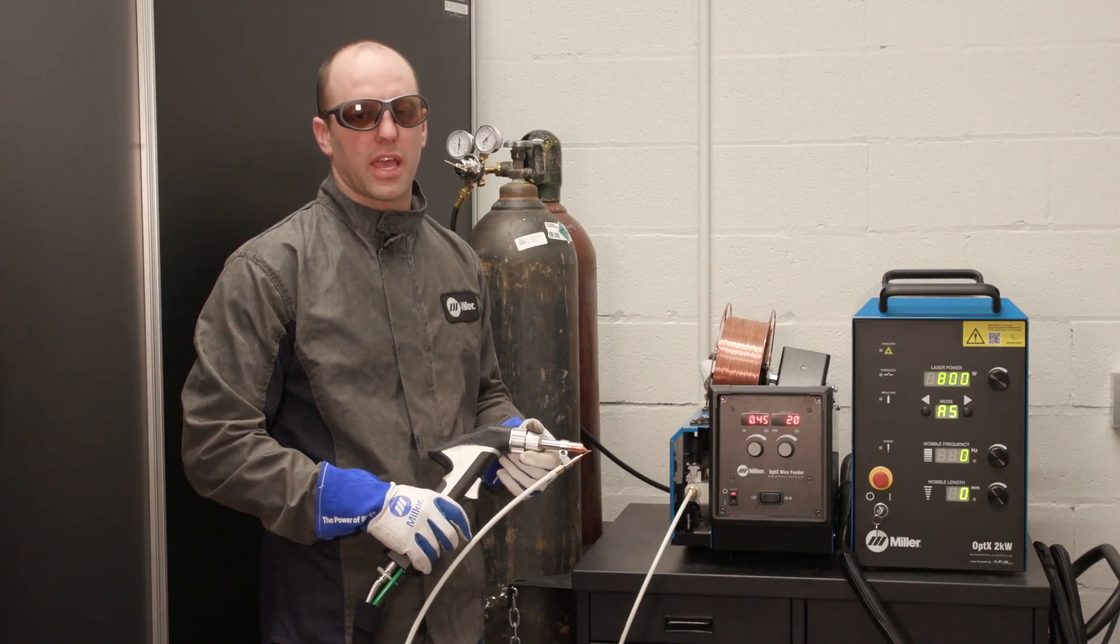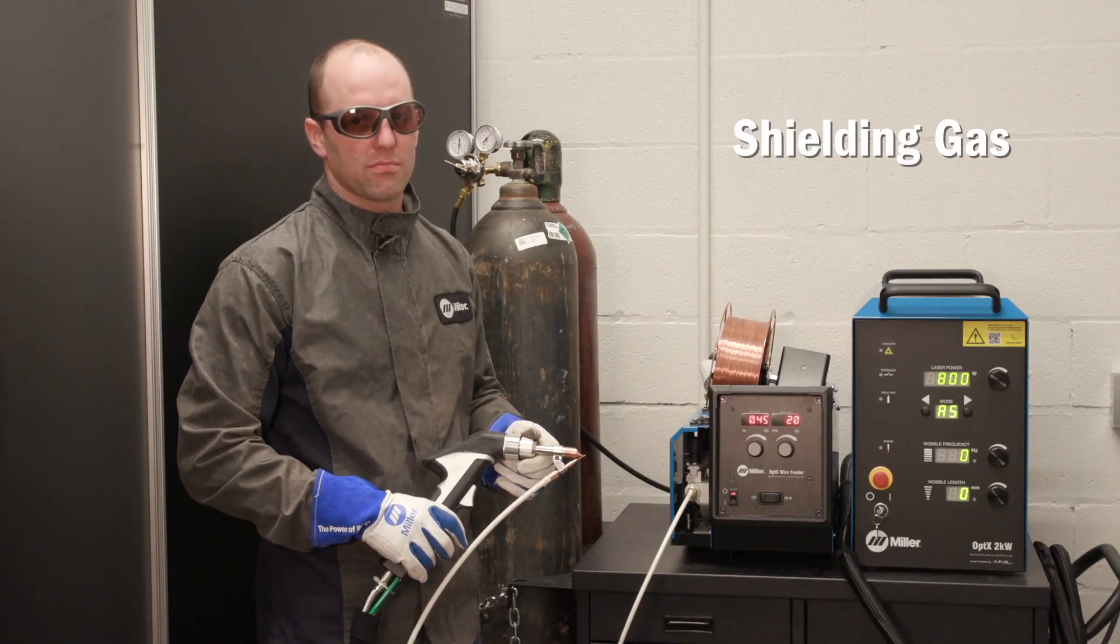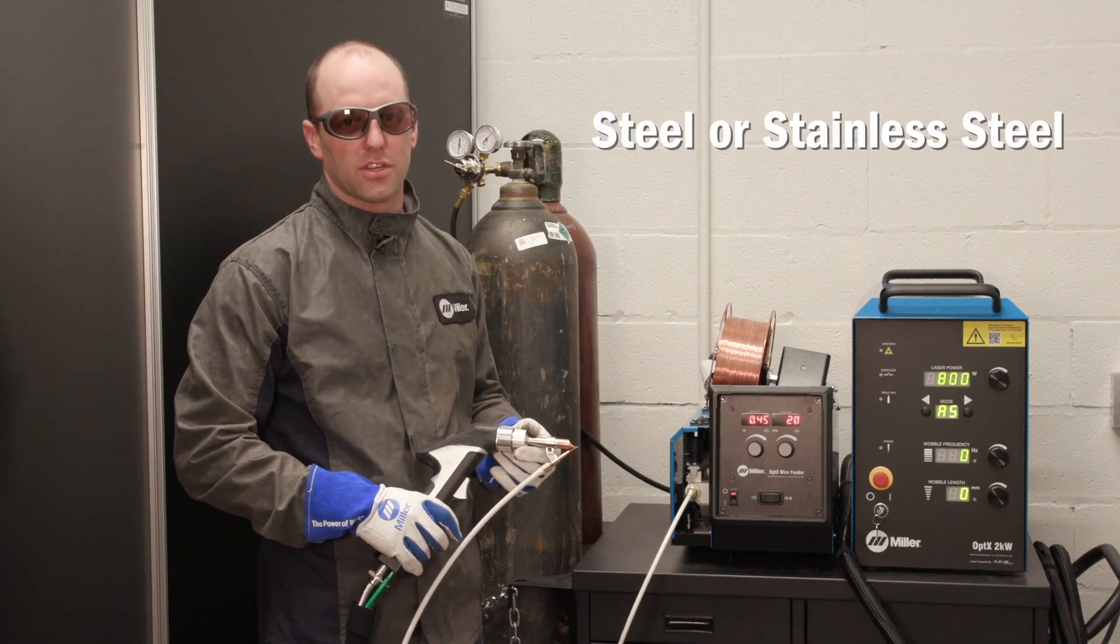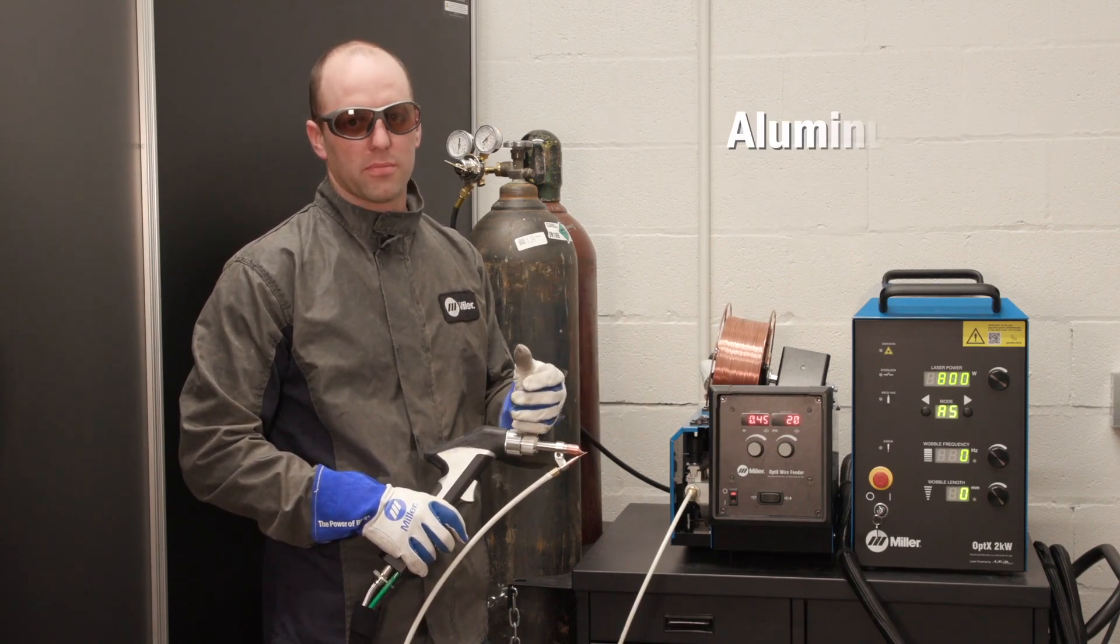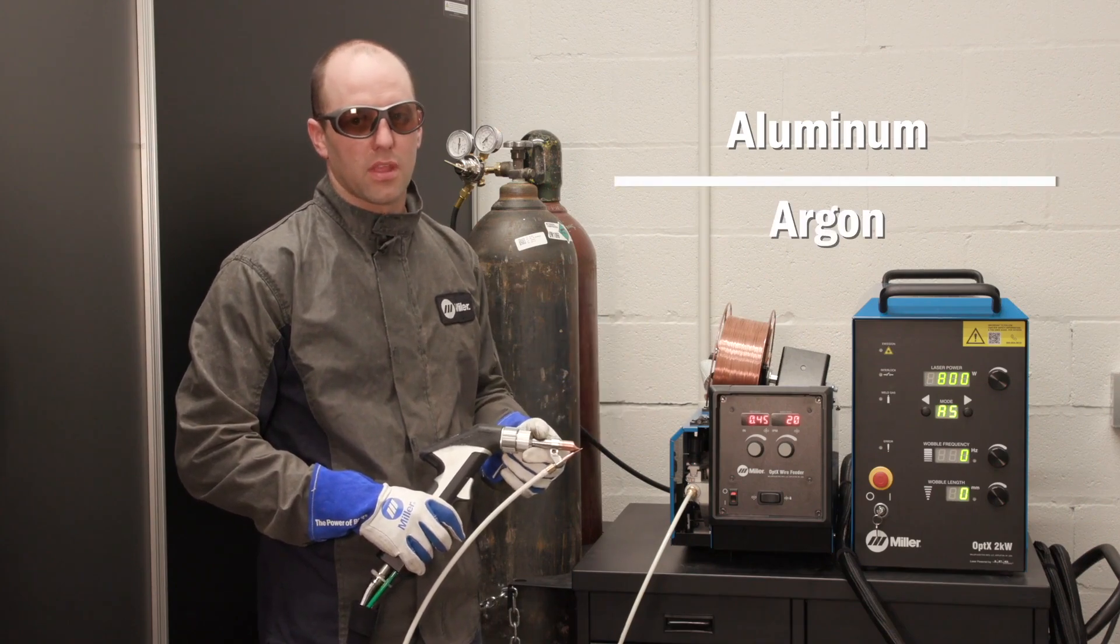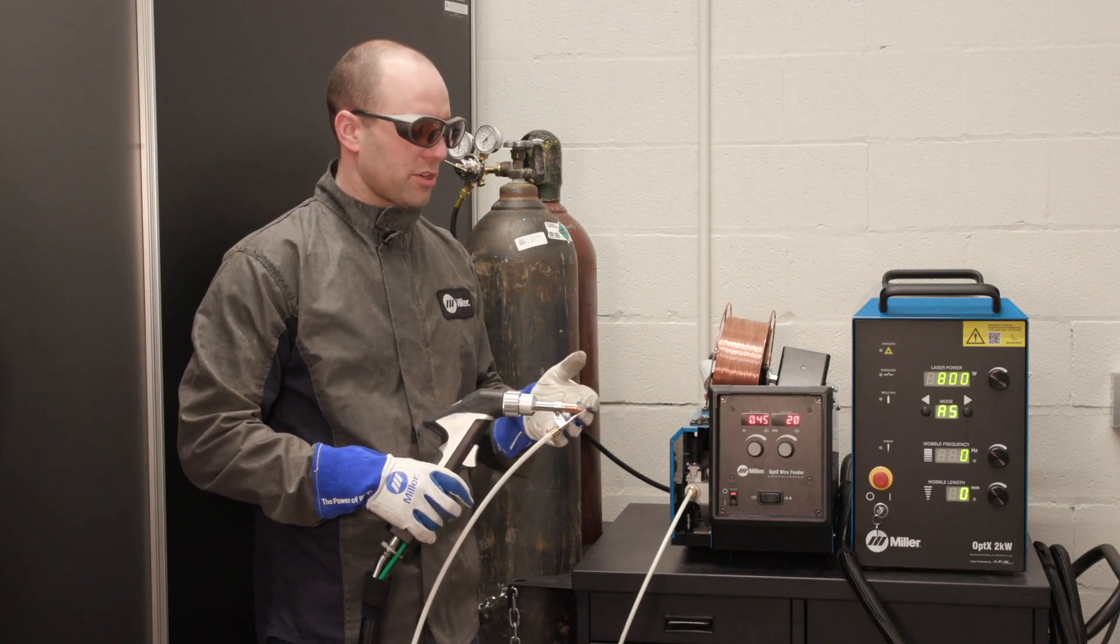Like many welding processes, the handheld laser requires shielding gas. If you're welding steel or stainless steel, you'll typically choose nitrogen. If you're welding aluminum, you'll choose argon. What is the function of shielding gas?